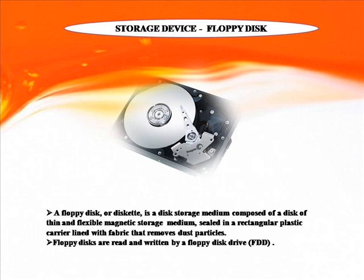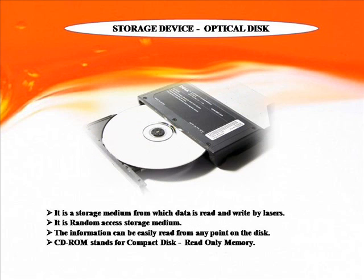Floppy Disk: A floppy disk or diskette is a disk storage medium composed of a disk of thin and flexible magnetic storage medium, sealed in a rectangular plastic carrier lined with fabric that removes dust particles. Floppy disks are read and written by a floppy disk drive. Optical Disk: A storage medium from which data is read and written by laser. It is a random access storage medium; information can be easily read from any point on the disk. CD-ROM stands for Compact Disk Read Only Memory. Thank you.